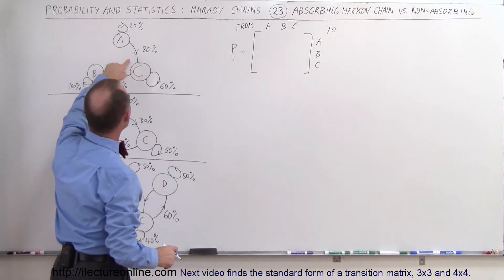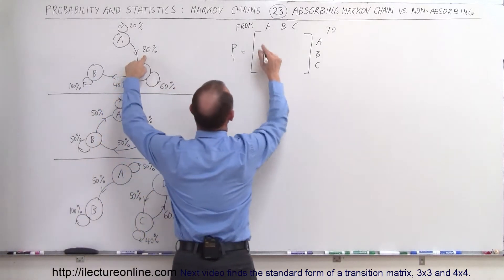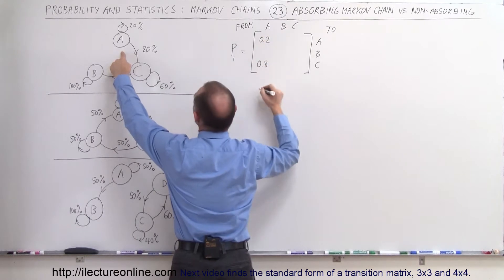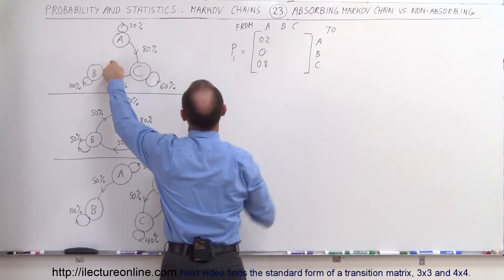Okay, so from A to C, we have 0.8. So from A to C, it's 0.8. From A to A is 0.2, and from A to B it is 0.